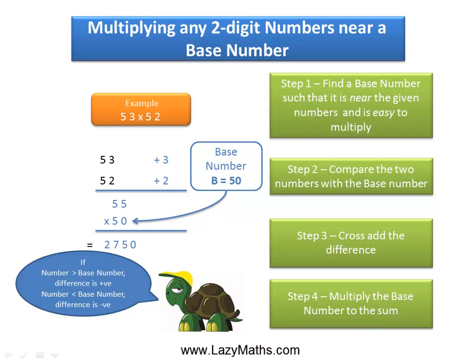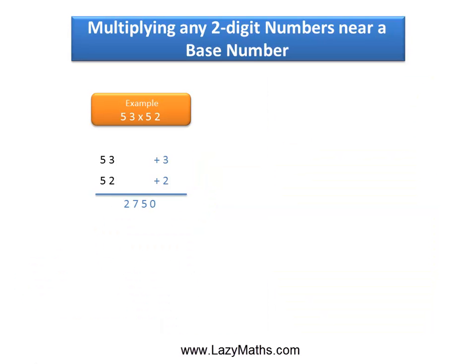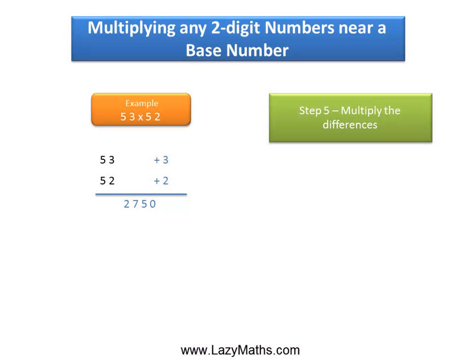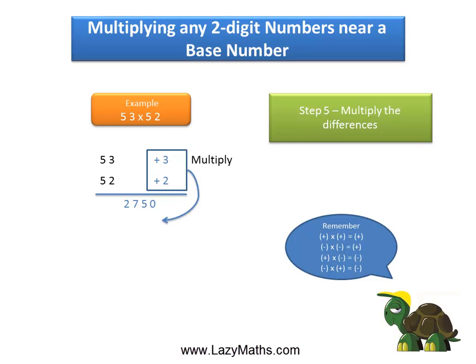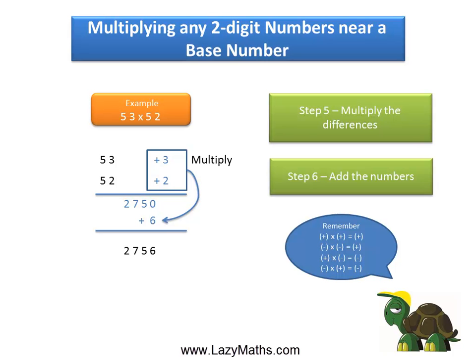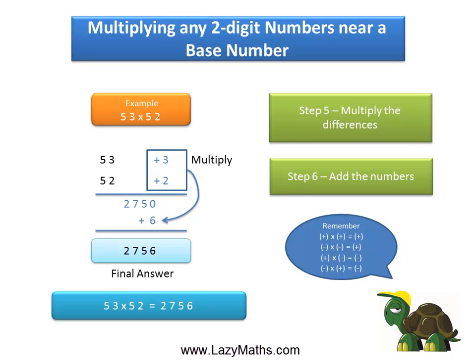Once we get 2750, the next step is fairly easy. We simply take the differences, which are positive 3 and positive 2, and multiply them. Positive 3 times positive 2 gives us positive 6. We add 6 to the 2750 to get 2756 as our final answer. So 53 times 52 equals 2756.